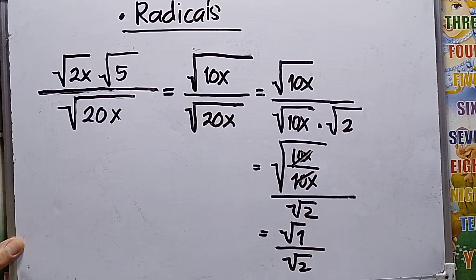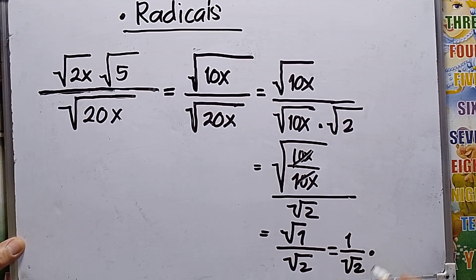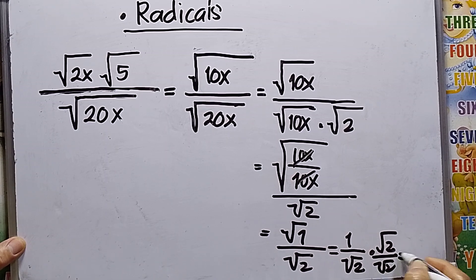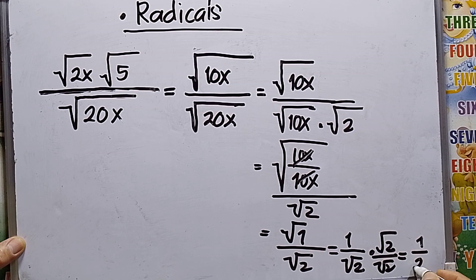To rationalize, I multiply by square root of 2 over square root of 2. The denominator becomes 2, and the numerator becomes square root of 2.